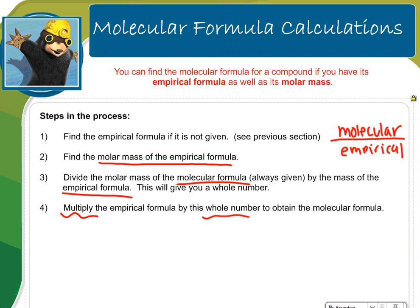Afterwards, you want to find the molar mass of the empirical formula just by adding up the different atoms, multiplying it by their molar masses. In step 3, you're going to divide the molar mass of the molecular formula by the mass of the empirical. Now the mass of molecular should be given to you in the problem. This will give you a whole number. Then you're going to multiply the empirical formula by this whole number to obtain the molecular formula. I realize it sounds tedious, it's not as bad as you think. Let's look at an example.